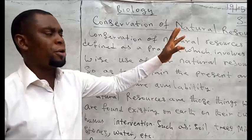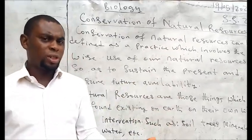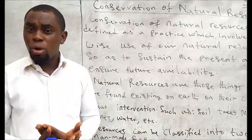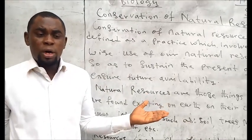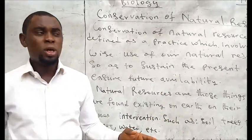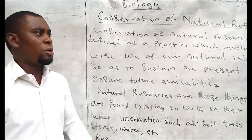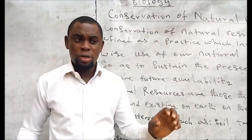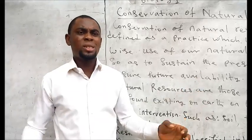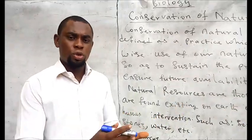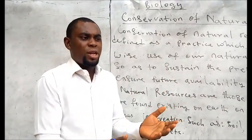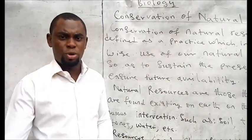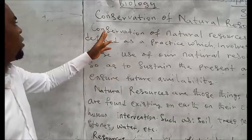Examples of natural resources include the soil — human beings have no intervention in creating soil. The trees all around are natural resources; human beings have no intervention in their existence. Wild animals, goats, sheep — all of these are naturally existing organisms and substances.